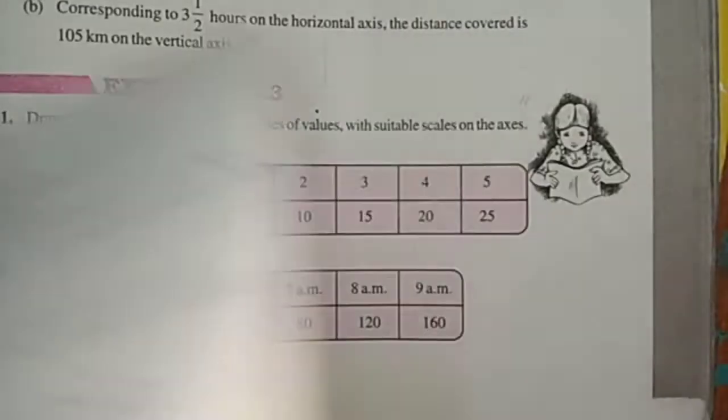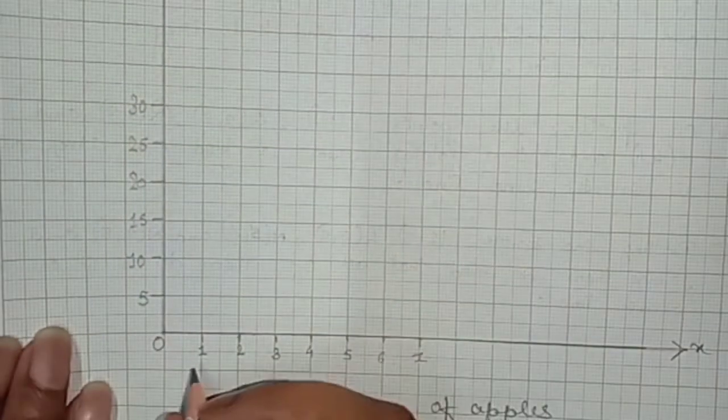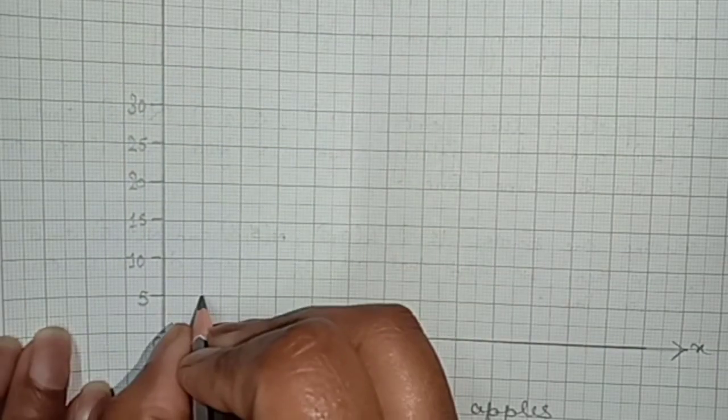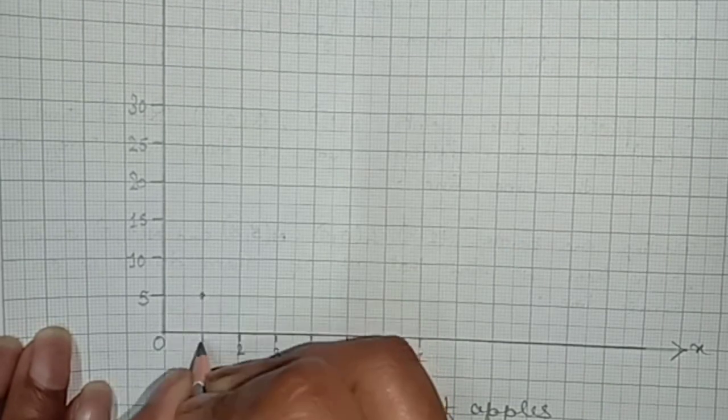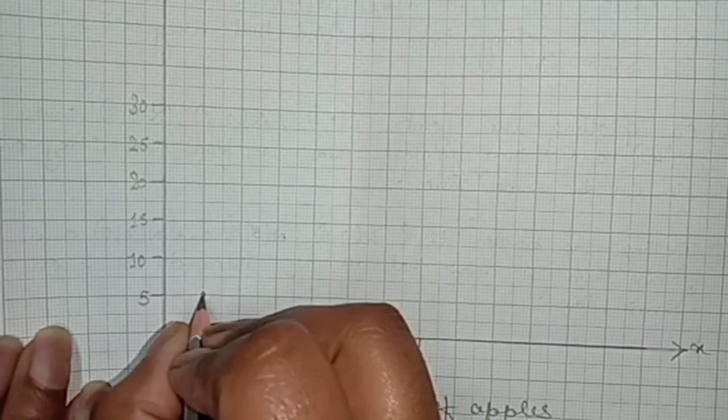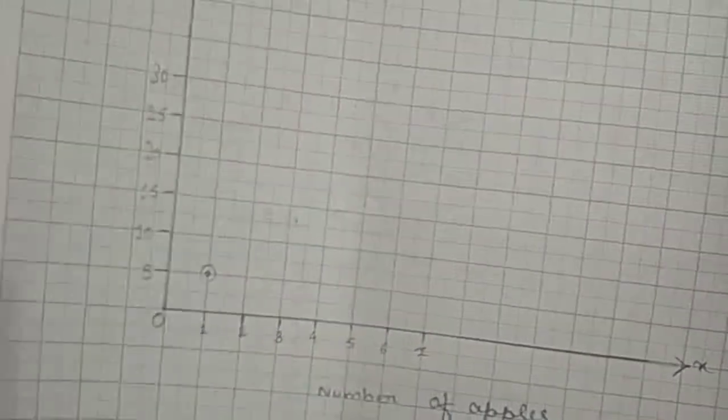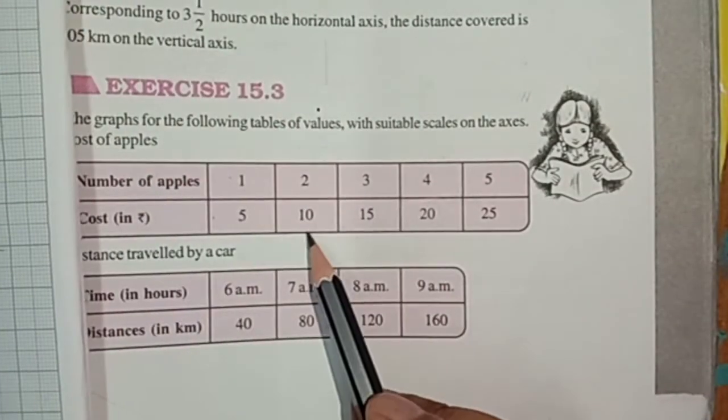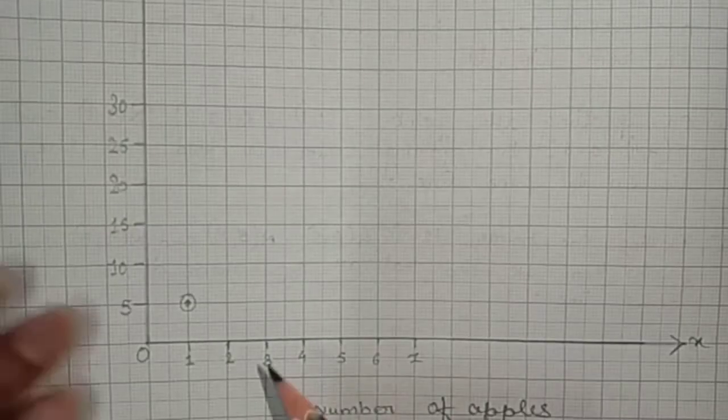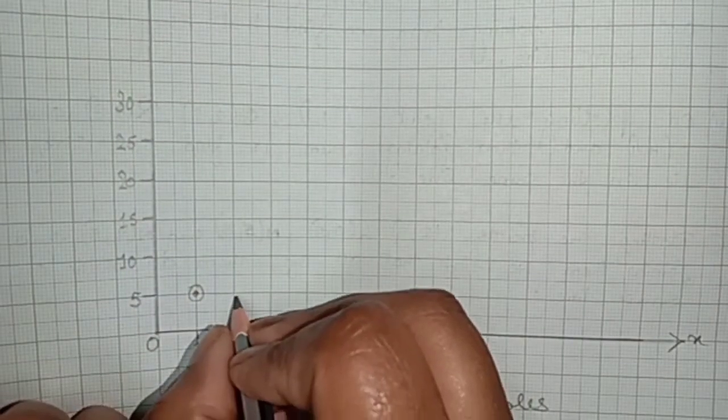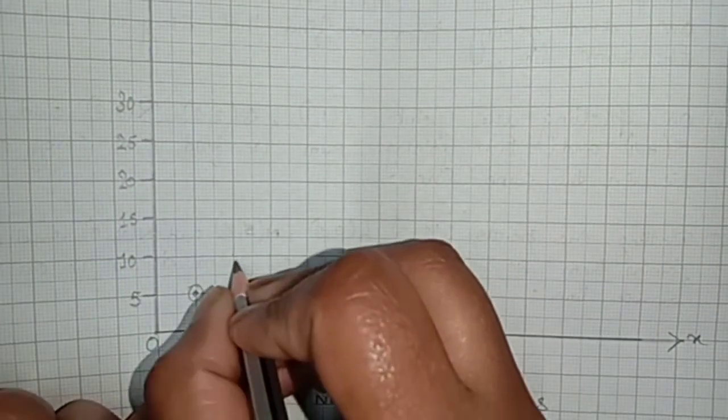We will plot the points. First point is 1 comma 5. X value will be 1 and y value is 5. Second is 2 comma 10. 2 is here and 10 is here.